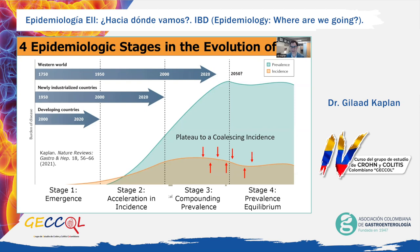Over the next few slides, I'll contrast the timelines of these three stages between the Western world — North America, Western Europe, Australia, and New Zealand — as compared to Asia and Latin America. I'll also reveal a fourth epidemiological stage called the prevalence equilibrium, which is yet to come to fruition in any country. Understanding the four epidemiologic stages is important because if we can predict future stages, we can prepare our healthcare systems for the change in volume and demographics of the IBD population over time.